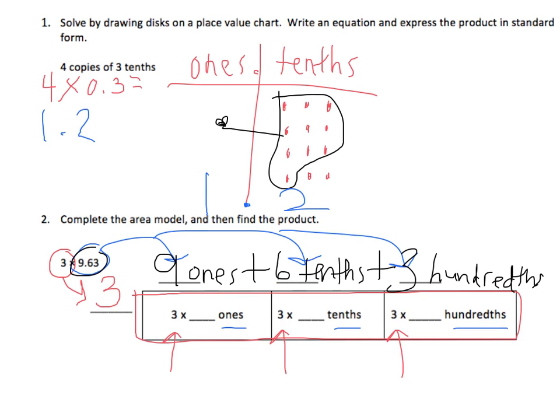So now that I know what numbers go on top of the area model, I need to bring those down to do my multiplication. So the first box is going to be 3 times 9 ones. The second box is going to be 3 times 6 tenths. And the third box is going to be 3 times 3 hundredths.